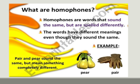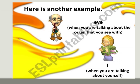Now see the example: 'pear' and 'pair.' We pronounce both as 'pear.' One is a fruit, and one is a pair of gloves. So these are homophones — 'homo' means same, 'phones' means sounds.